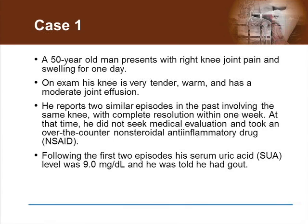So, the question is: what is the most appropriate diagnostic approach for this patient? A, knee radiography. B, prior history of acute arthritis of short duration and good response to NSAIDs is sufficient to make a diagnosis of gout. C, arthrocentesis of the knee to evaluate the synovial fluid for the presence of monosodium urate crystals. Or D, an elevated serum uric acid in the setting of recurrent acute monoarthritis is diagnostic of gout.